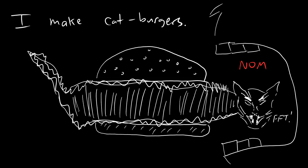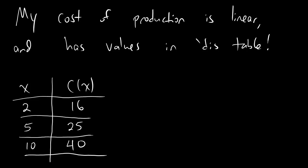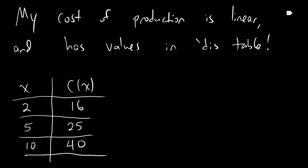And because there is such a widespread public demand for cat burgers, I, an ever aspiring entrepreneur, I make cat burgers and I sell cat burgers and then people nom the delicious cat burgers. And as any entrepreneur does, I have problems with cost and revenue and profit. And so here's what I'm trying to figure out today. I start off knowing that my cost of production is linear and has values in the following table.